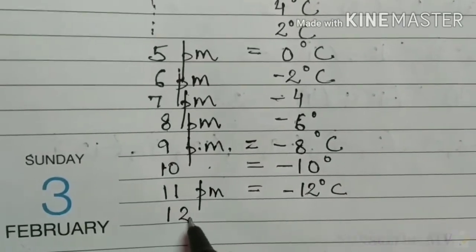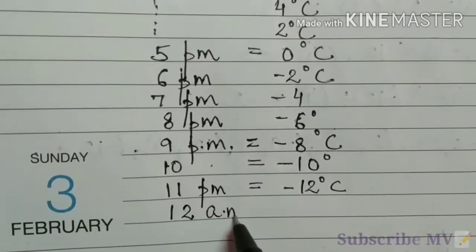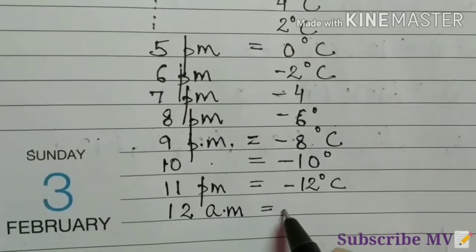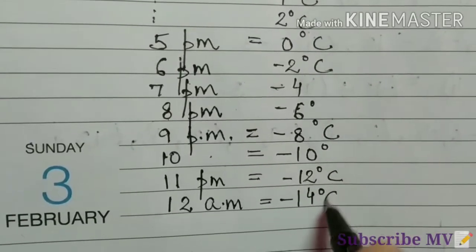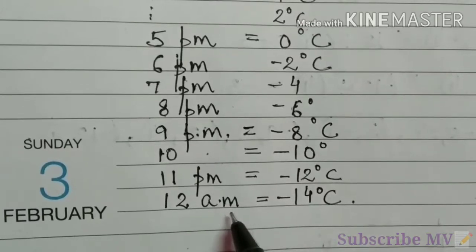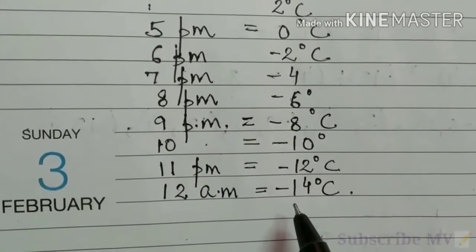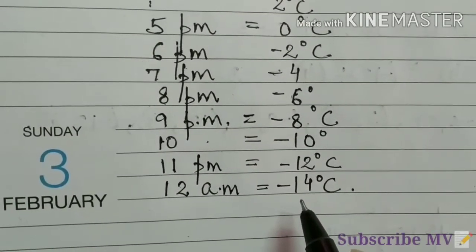And 12, it will be a.m. minus 14 degree Celsius. So at midnight, the temperature will be minus 14 degree Celsius.